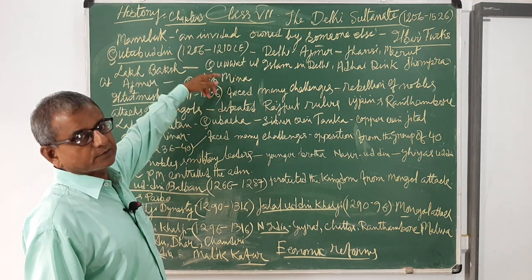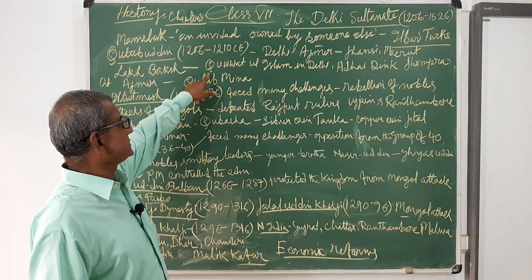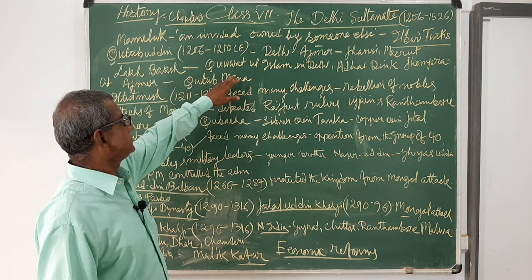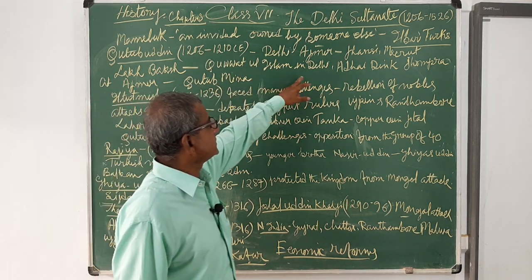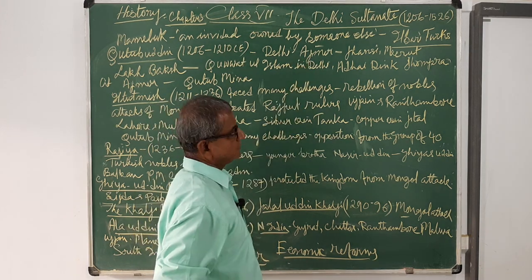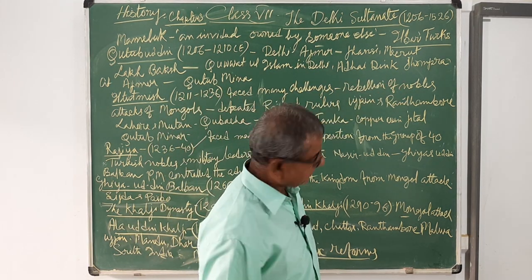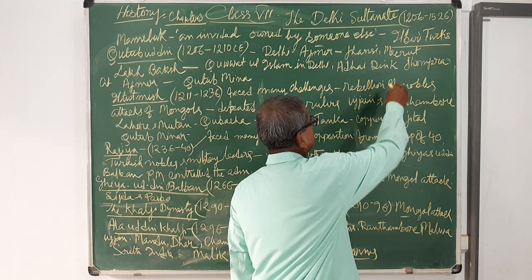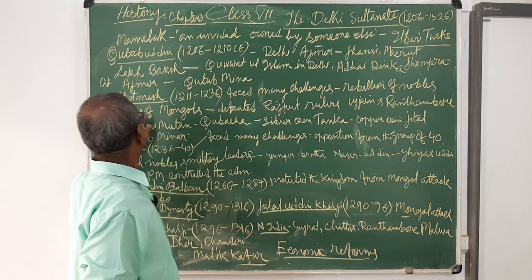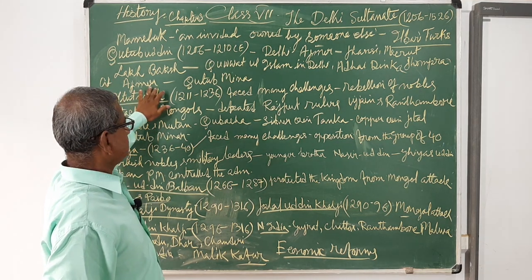He was a great builder and patron of art and architecture. He built two mosques: Quwwat-ul-Islam in Delhi, and Adhai Din ka Jhonpra at Ajmer.